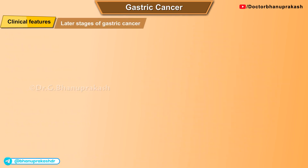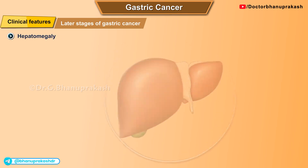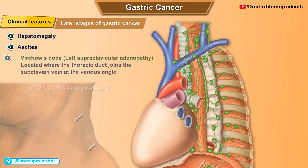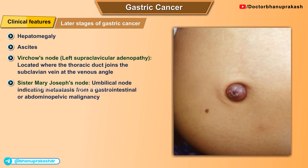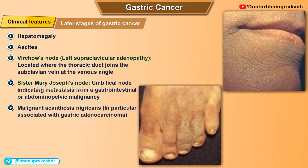In later stages of gastric cancer, clinical manifestations may include hepatomegaly, ascites, Virchow's node (left supraclavicular adenopathy located where the thoracic duct joins the subclavian vein), Sister Mary Joseph's node (umbilical node indicating metastasis from a gastrointestinal or abdominopelvic malignancy), and malignant acanthosis nigricans, which is particularly associated with gastric adenocarcinoma.